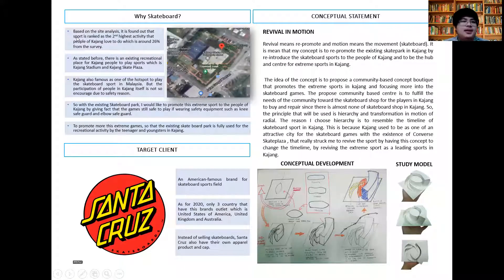Why skateboard? Based on site analysis, skateboard is ranked as the second highest activity that people of Kajang love to do, which is around 26% from the survey. As stated before, there is an existing recreational place for Kajang to play sports: Kajang Stadium and Kajang Skate Plaza. Kajang is also famous as one of the hotspots to play skateboard in Malaysia.